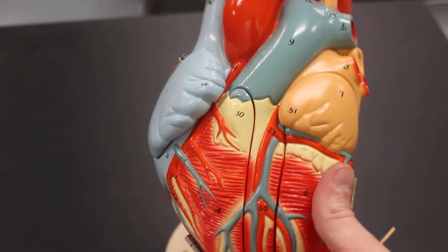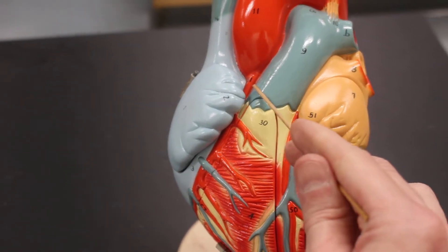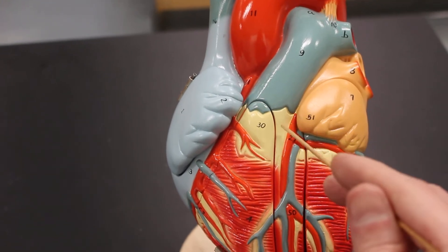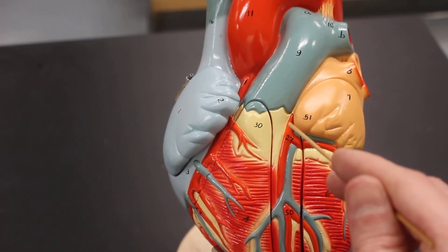Then lying on the heart we have here the right coronary artery and over here is the left coronary artery.